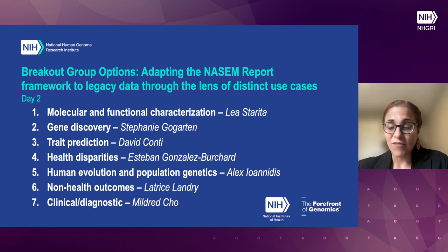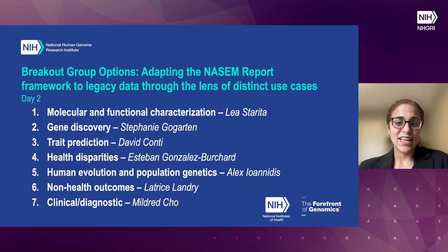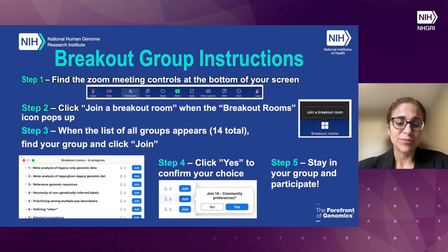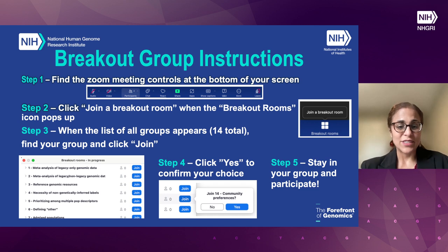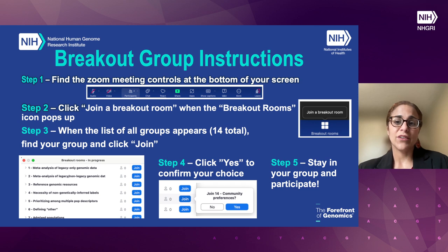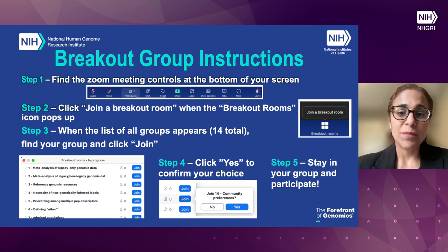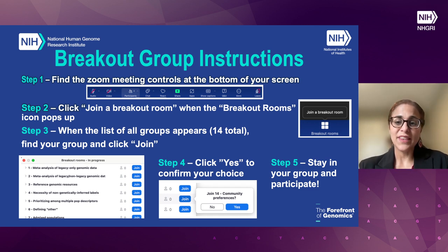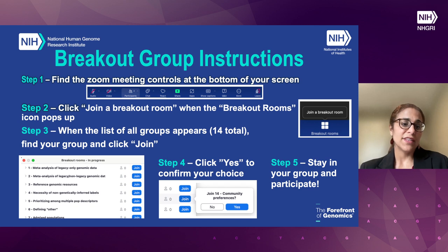So these are the seven breakout groups that we have. Hopefully you have already considered which one you're interested in. To join: find the controls at the bottom of your screen — that's where you can see the Q&A and where you can mute and unmute yourself. In that control panel, at the moment you don't have the breakout group icon, but when we're ready, Jacob is going to deploy that. You will see the icon pop up, and when that happens you can click on 'join a breakout group.'